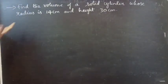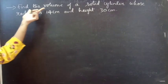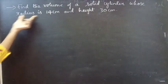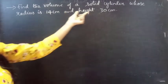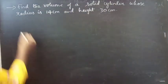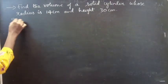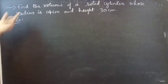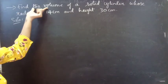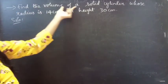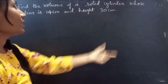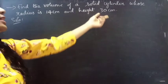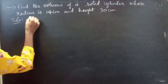Problem: find the volume of a solid cylinder whose radius is 14 cm and height 30 cm. So here we are asked to find the volume of a solid cylinder whose radius is 14 cm and height is 30 cm.